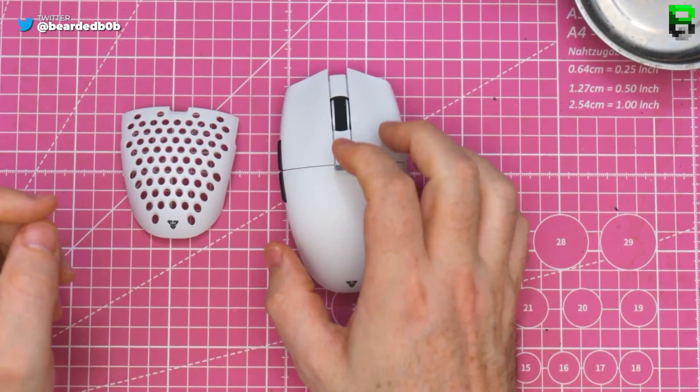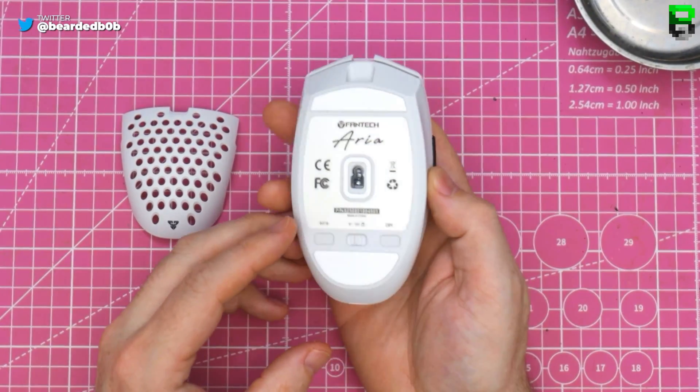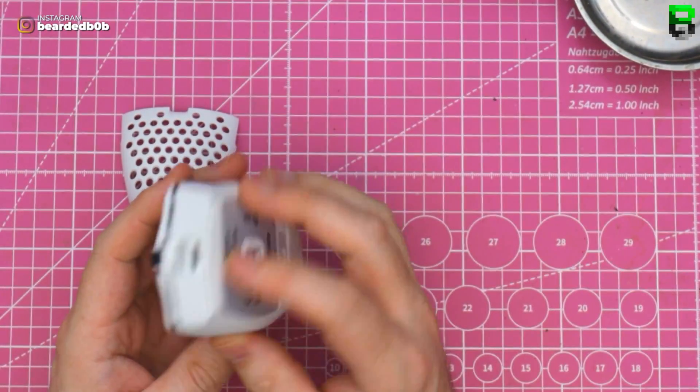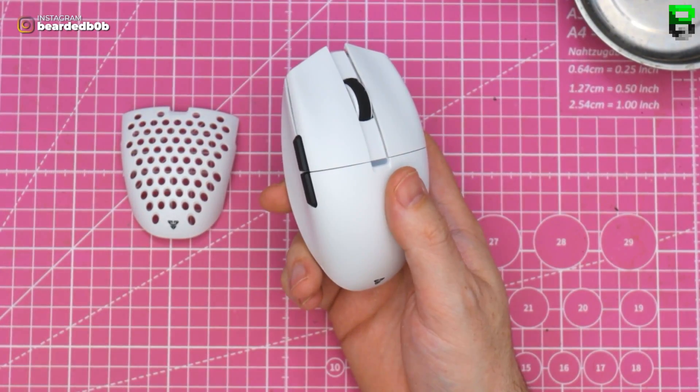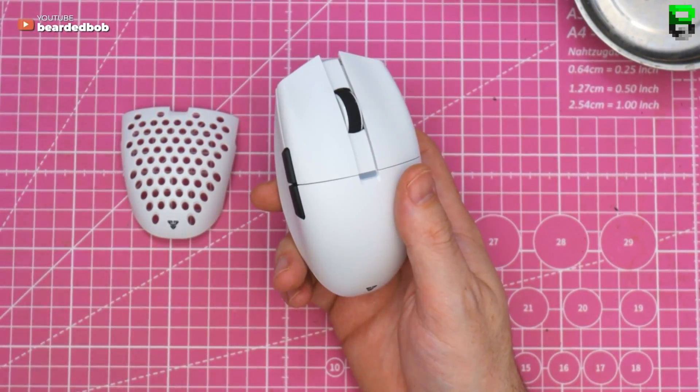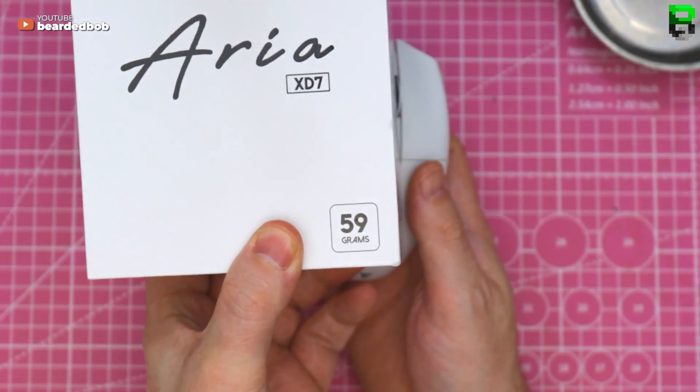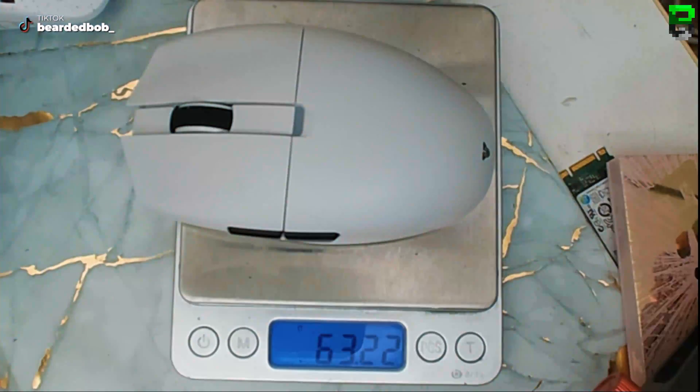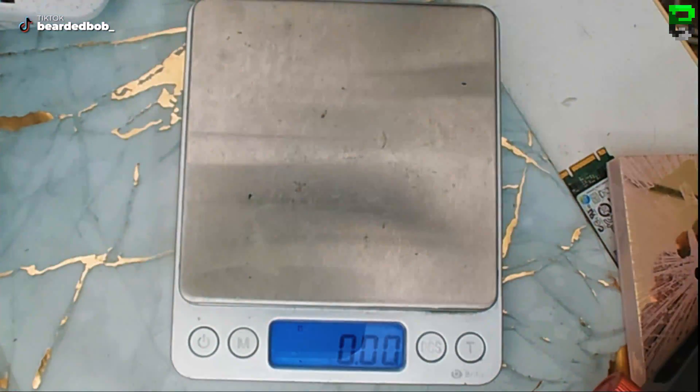Right, so it's time to do the Fantech Aria XD7 teardown and see what it's like. With the rear panel on they reckon it's 59 grams plus one, but we know it's going to be a bit heavier than that. We've already weighed it without the dongle - 63 grams, so still a little bit more with the rear panel.